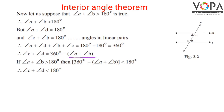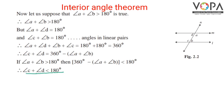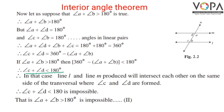Rearranging, angle C plus angle D equals 360 minus (angle A plus angle B). If angle A plus angle B is greater than 180 degrees, then 360 minus (angle A plus angle B) will be less than 180 degrees. So angle C plus angle D would be less than 180 degrees.